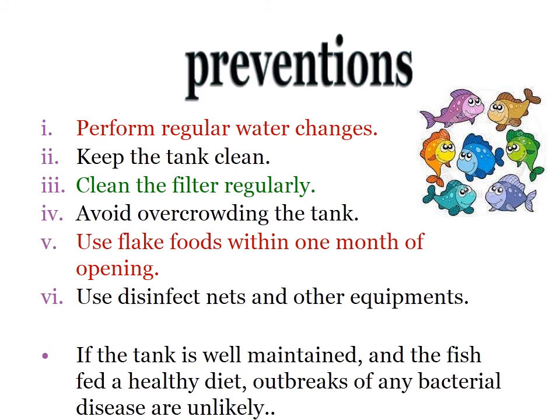Costia disease is caused by Costia necatrix. Symptoms include milky cloudiness on the skin, inflammation, reddening of the skin, and bleeding on the underside of the mouth and pectoral area. Sick fish often rub or scratch against objects. Treatment: raise water temperature to 30–32 degrees Celsius. Formalin, malachite green, and copper sulphate are the drugs of choice for Costia.